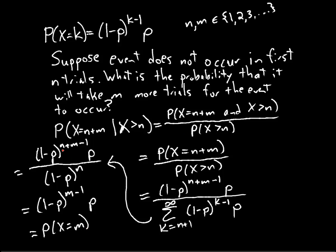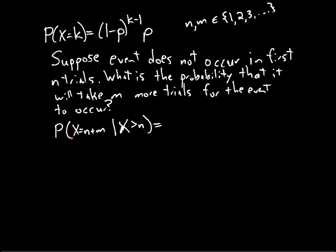So we found that the probability that x equals n plus m, conditioned on x greater than n, is just the probability that x equals m. This is what it means for the random variable to be memoryless. If we already know that we've waited n trials, that doesn't change anything — the probability that we wait m more trials is the same as the probability that it takes m trials to begin with. The fact that n trials go by without success does not affect the upcoming trials. So the random variable x is memoryless.